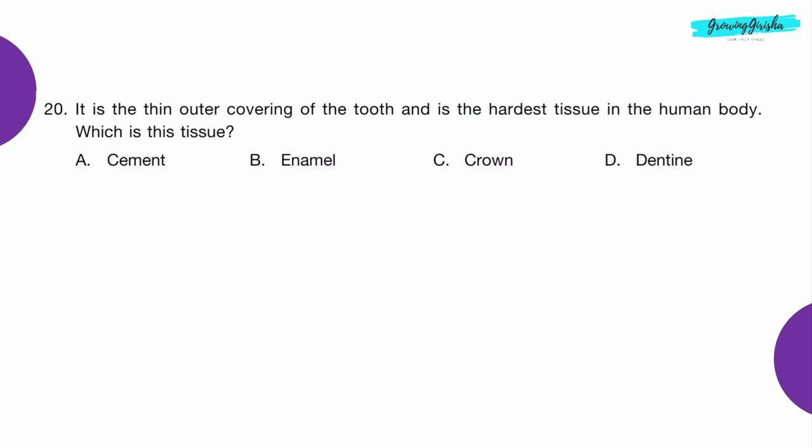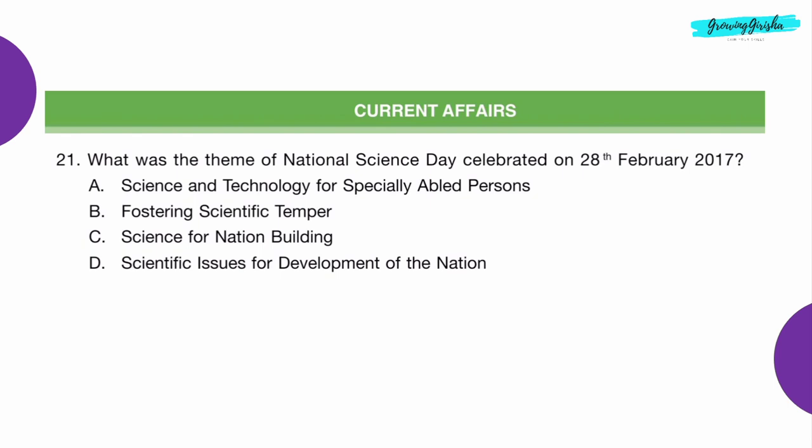Question 20: It is the thin outer covering of the tooth and is the hardest tissue in the human body. Which is this tissue? Option B: Enamel.